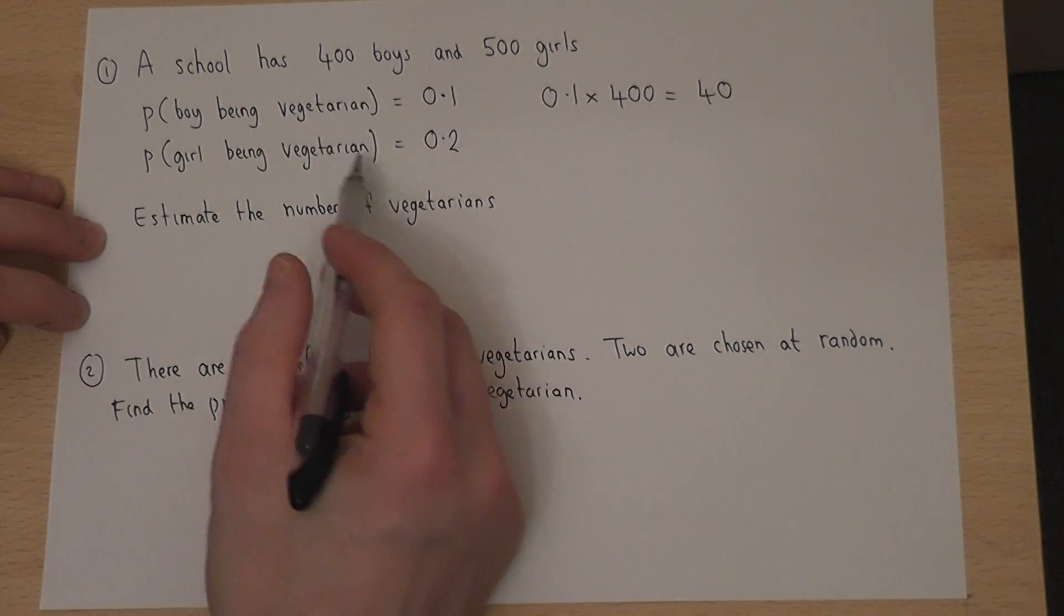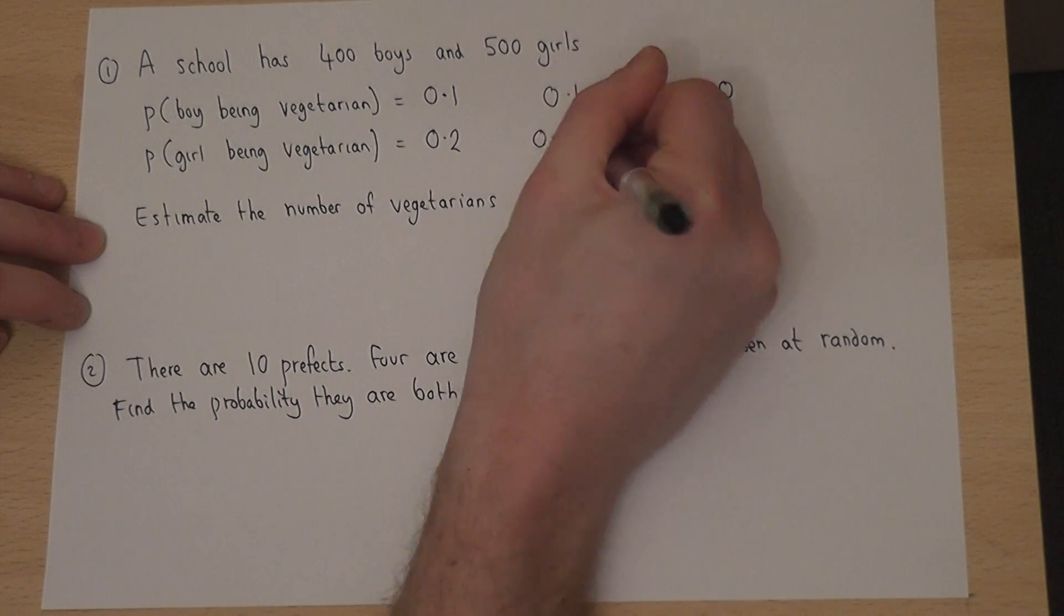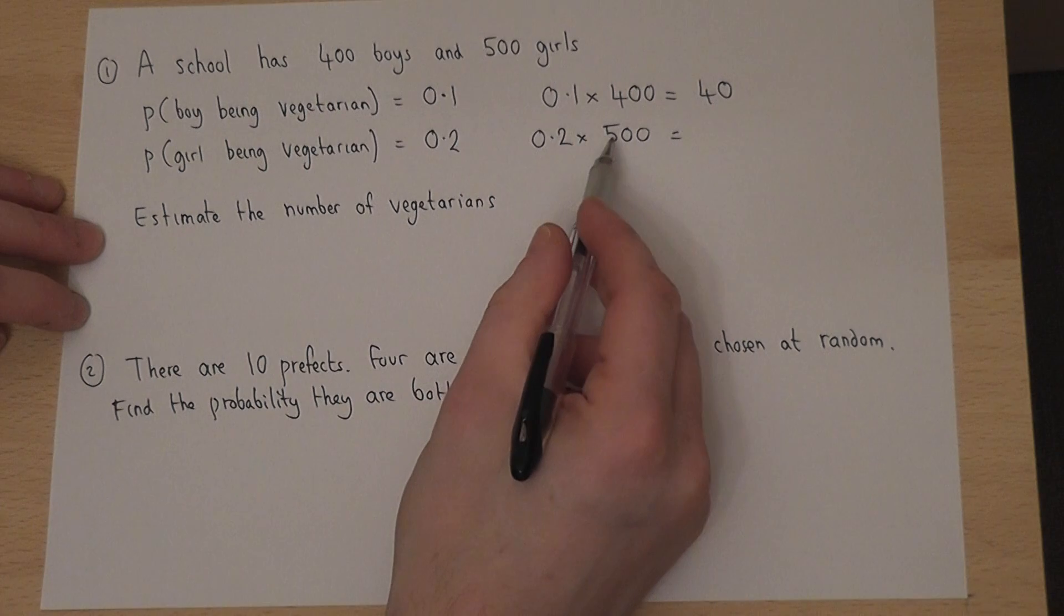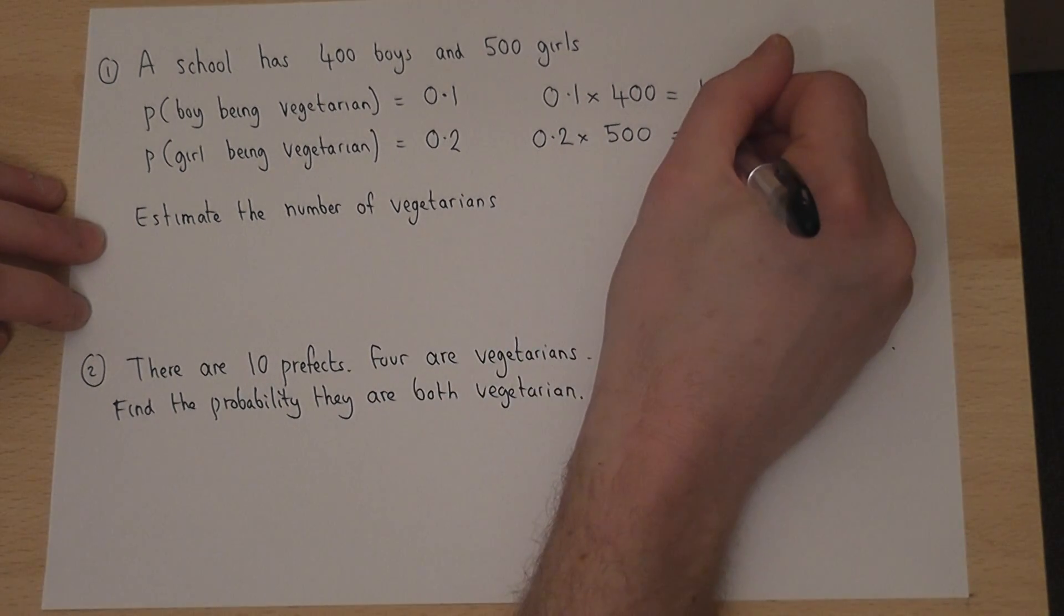Now the number of girls we'd expect to be vegetarian is 0.2 times 500. 0.1 times 500 is 50, so 0.2 times 500 is 100.